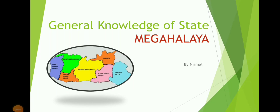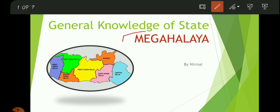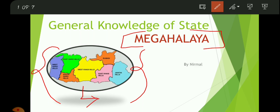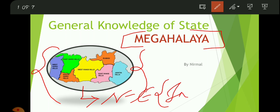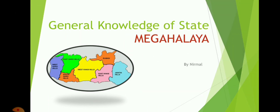Hello everyone, welcome to Never Stop Learning. Today we are going to see the general knowledge of the state Meghalaya. Before moving forward, have a look at the map — Meghalaya is located on the northeast side of India's map. Meghalaya is a part of the Seven Sisters, and I have told you how to remember the Seven Sisters. So I hope you know that. Now let us move to the first question.